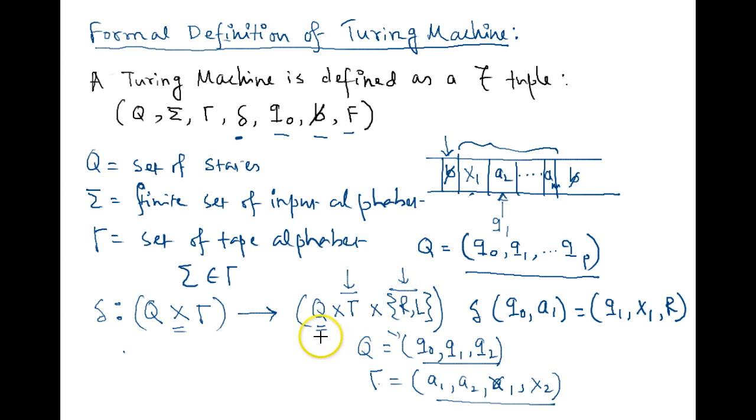So it is the cross product between any element of this Q and Gamma and R or L. So this is the delta rule. Then q0 is the initial state, q0 is initial state from where the machine starts. B is considered as blank space.